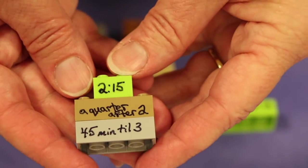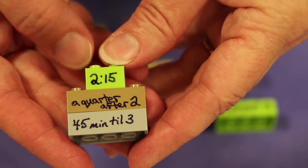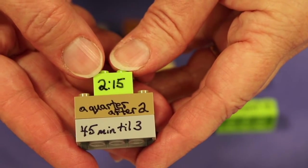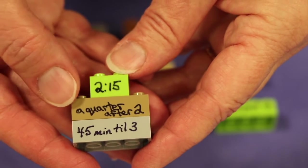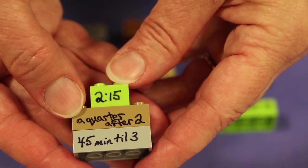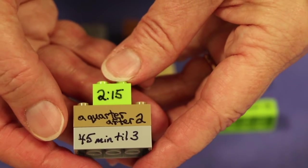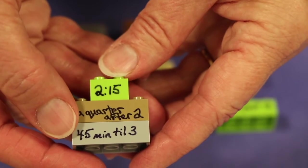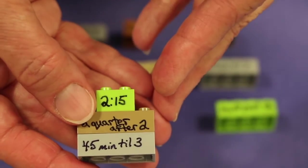So also included in your kit will be a couple of these time-telling Legos. You'll have the small one, which actually shows the time. This one is 2:15. The next one will say a quarter after 2 is another way of saying 2:15. Another way of saying 2:15 is 45 minutes to 3. So all of these would equal 2:15.